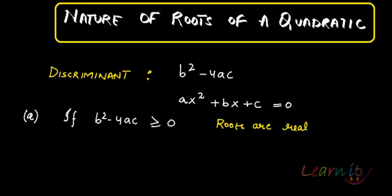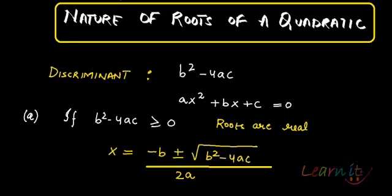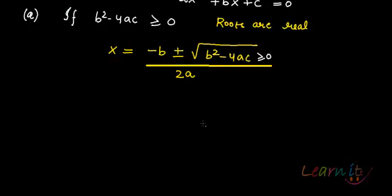Why is that? When solving ax squared plus bx plus c equals zero, x equals minus b plus or minus the square root of b squared minus 4ac, all divided by 2a. If whatever is inside this square root is greater than or equal to zero, you can take a real square root of it, and in that case the roots will be real.